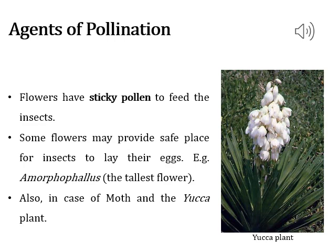Animal-pollinated flowers are typically large, colorful, fragrant, and rich in nectar. Nectar and pollen grains are the floral rewards for pollinators. When flowers are small, they form inflorescences to make them more visible. Flowers pollinated by flies and beetles secrete foul odors to attract these animals. The pollen grains are generally sticky. When an animal comes in contact with the anthers and then the stigma, pollination results.